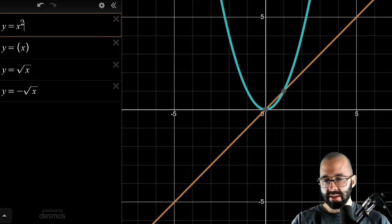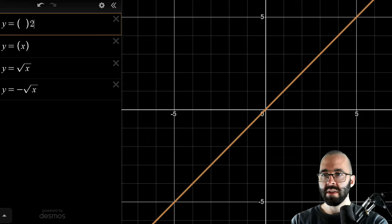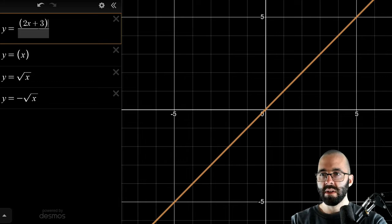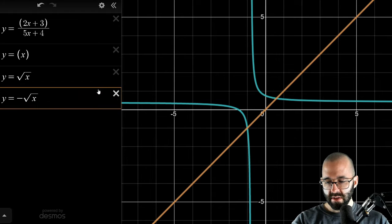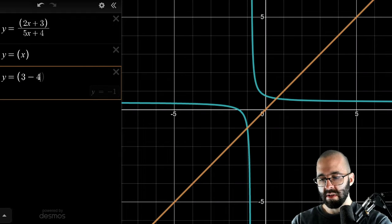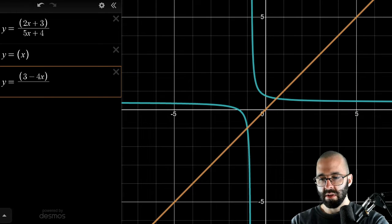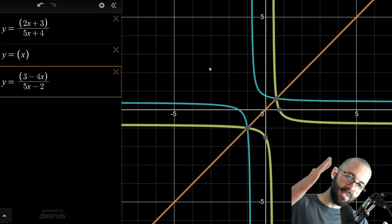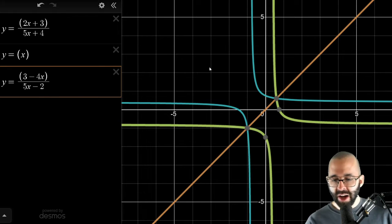You could go over here and say, let's graph each of these functions. Two X plus three divided by five X plus four. Is that symmetric with the inverse, which is three minus four X divided by five X minus two? Are these two functions reflections about that orange line? And yeah, they are. Cool. Great. A way to visualize these.